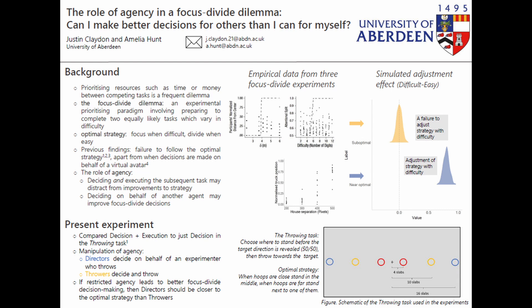In this paradigm, an effective decision rule is to focus your resources when the tasks are difficult and divide them when the tasks are easy. Despite the simplicity of this rule, people make highly variable and suboptimal decisions in the focus divide dilemma, apart from an aversion of the task which restricted participants' agency to only deciding how to prioritize, with no subsequent task execution demand.